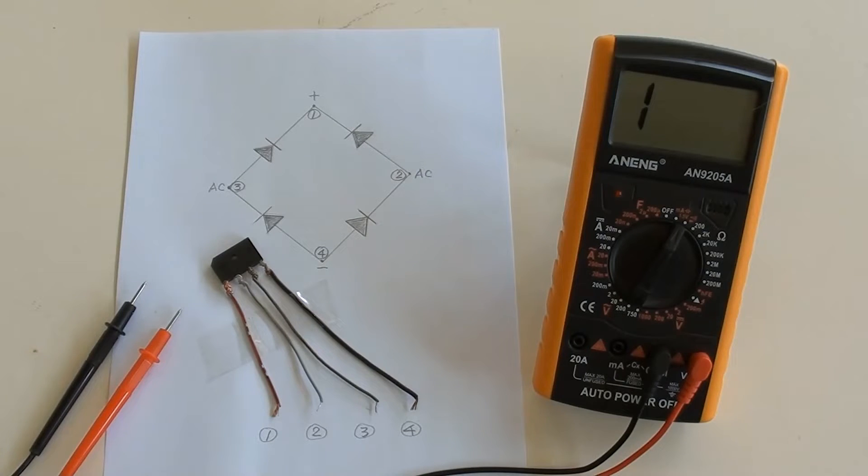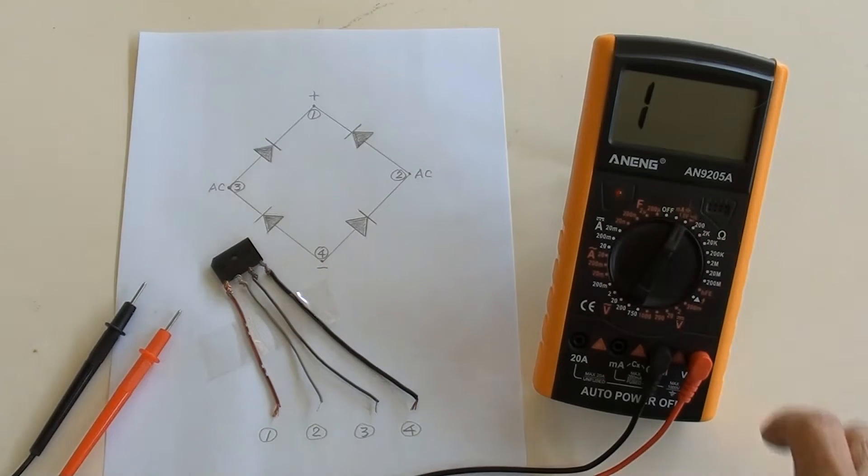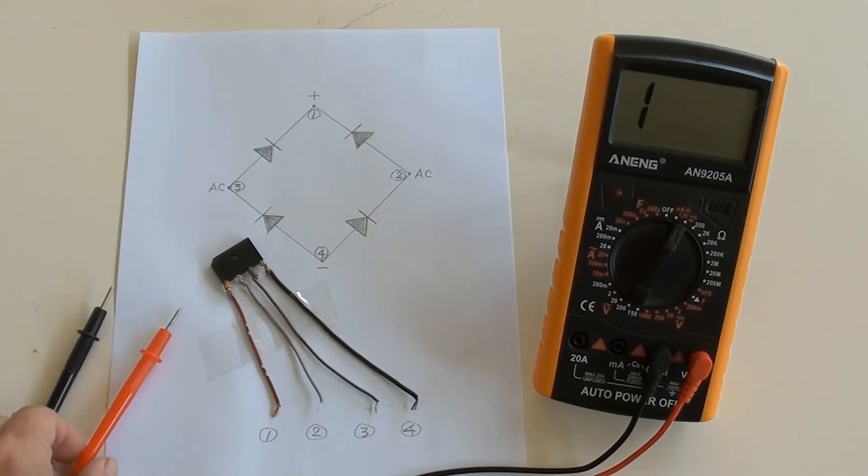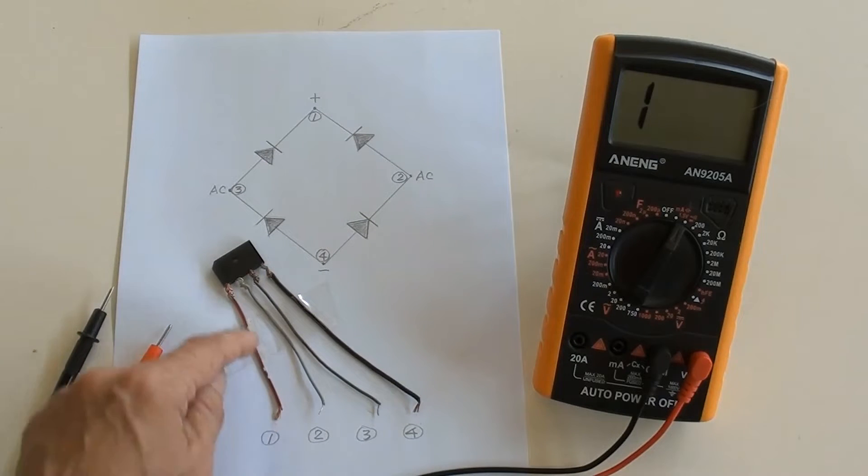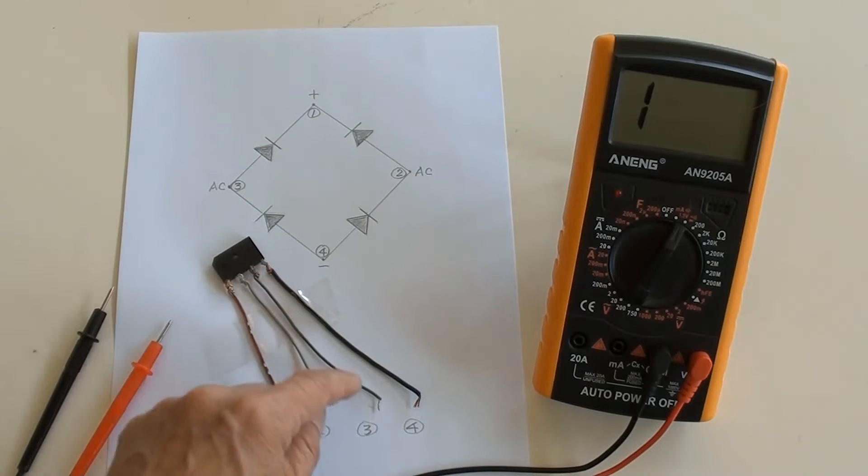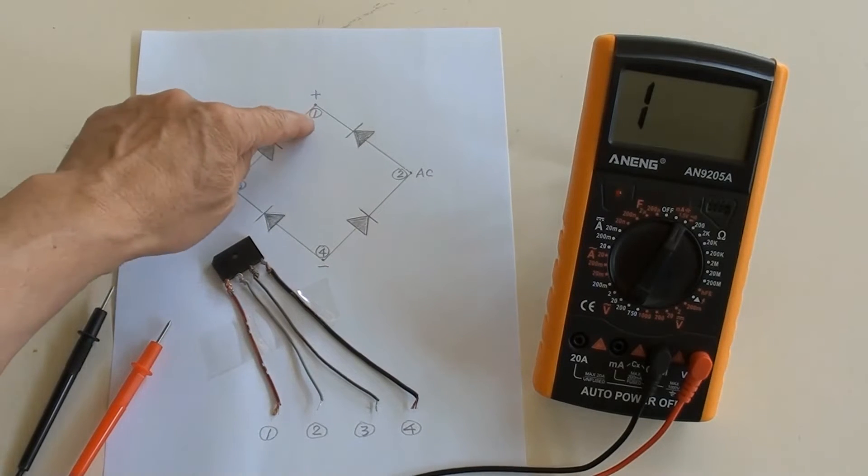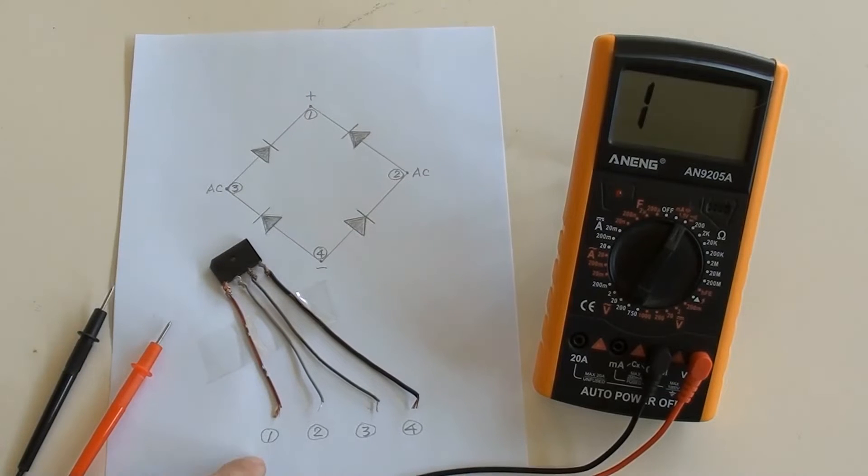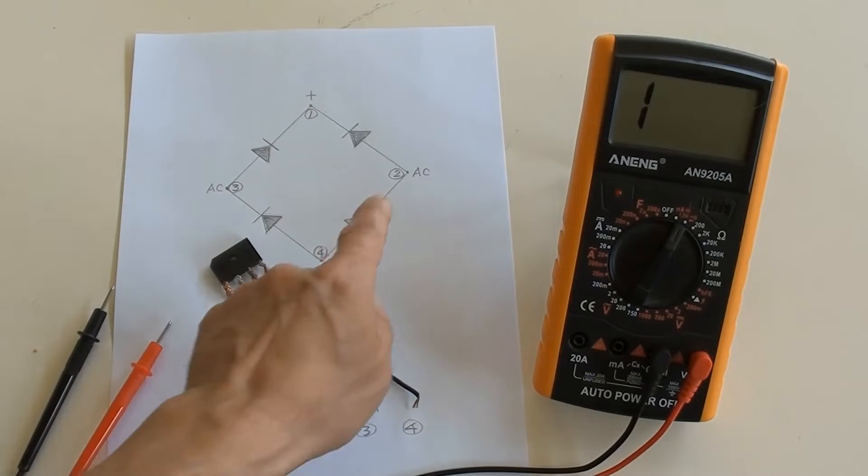Use a multimeter to test this rectifier and select the diode position. In order to have a convenient testing, the rectifier's four terminals are connected to extended wires, also marked one, two, three and four accordingly.